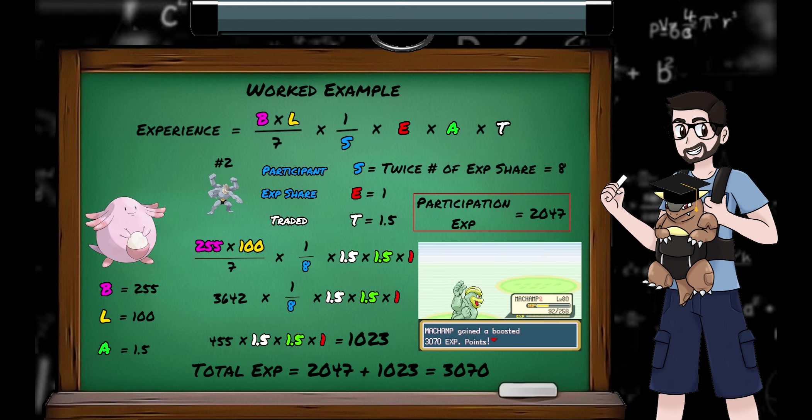For the XP share calculation, we'll have the same base and level, but S will be twice the number of non-fainted Pokemon with an XP share, which is 8, giving us 455, which again gets the trainer and the traded times 1.5 multipliers, giving us an additional 1023 experience, meaning Machamp gets 3070 experience in total.